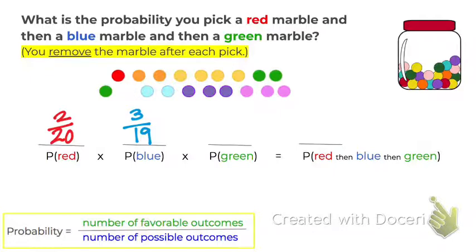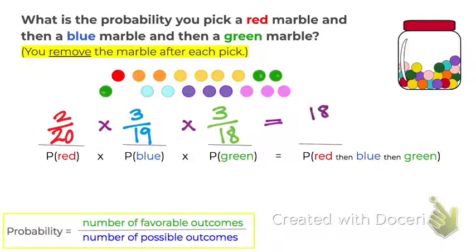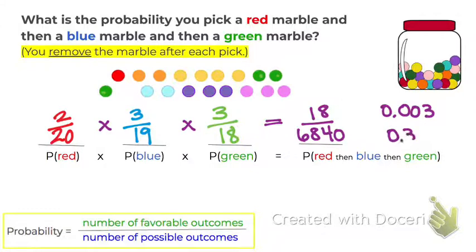So now there are only 18 marbles. What's the probability of picking a green if there are only 18 marbles in here? 3 out of 18, because there are 3 green. Once you have the probability of each event happening, you multiply them together. 2 times 3 times 3 is 18. We multiply the bottom numbers and get 6,840. If you divide to change it to a decimal, we get 0.003, which is just a 0.3% chance — a very slim chance that you're going to reach in and pick a red, then a blue, then a green.